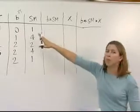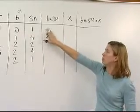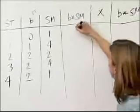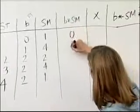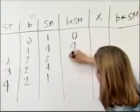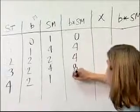Then we're going to multiply the beam of the vessel times the Simpson's multiplier. That will give us 0, 4, 4, 8, and 2.